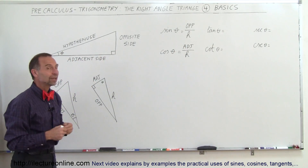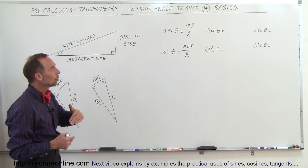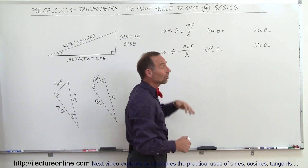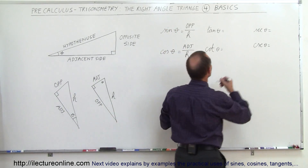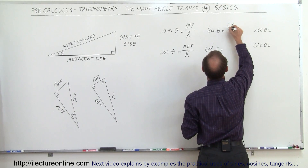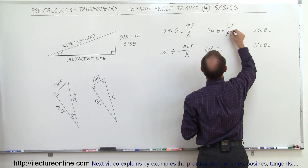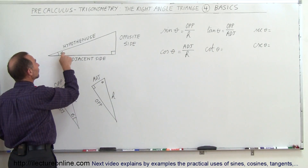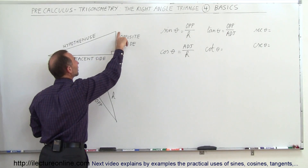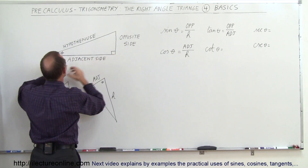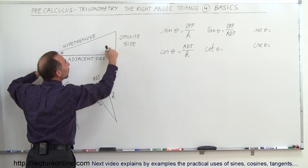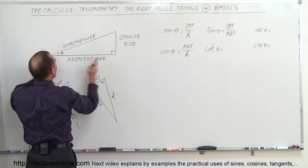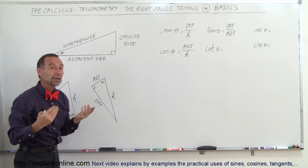Now about the tangent of theta — remember the tangent is the sine divided by the cosine. So taking opposite over hypotenuse divided by adjacent over hypotenuse, we get opposite divided by adjacent. The tangent of theta is the ratio of the opposite side divided by the adjacent side. If the angle is small, the opposite side is small so the tangent is small; if the angle is very big, the opposite side is big and the adjacent side is small, so the ratio is large.